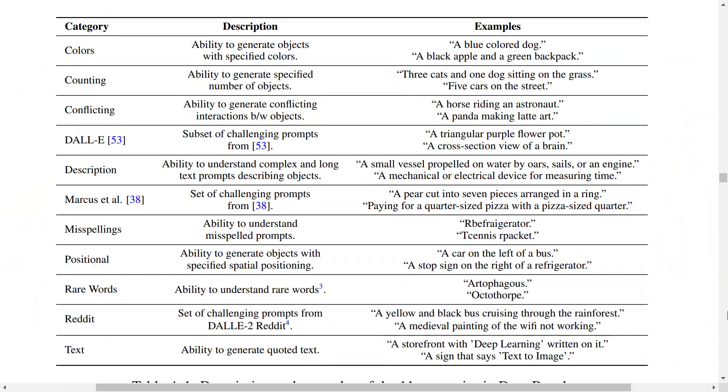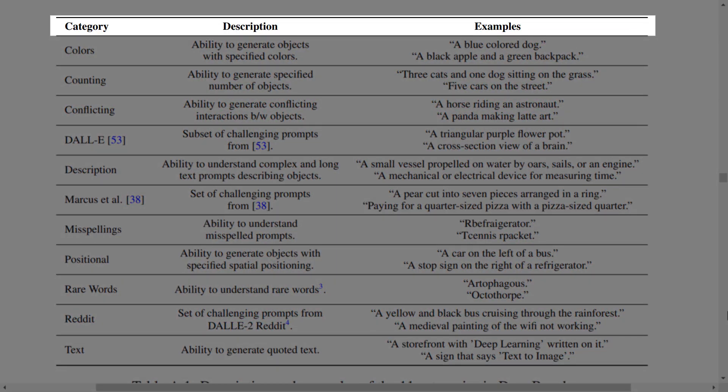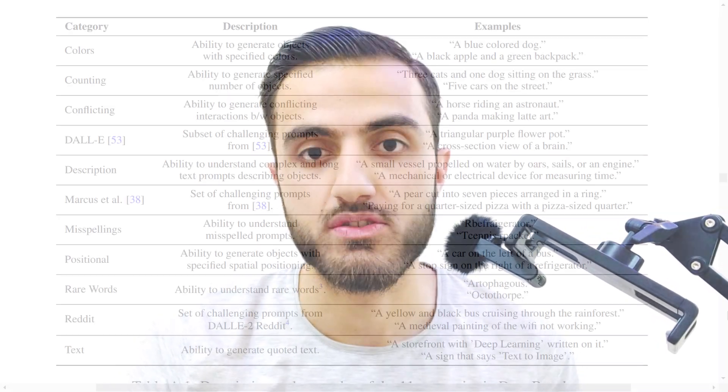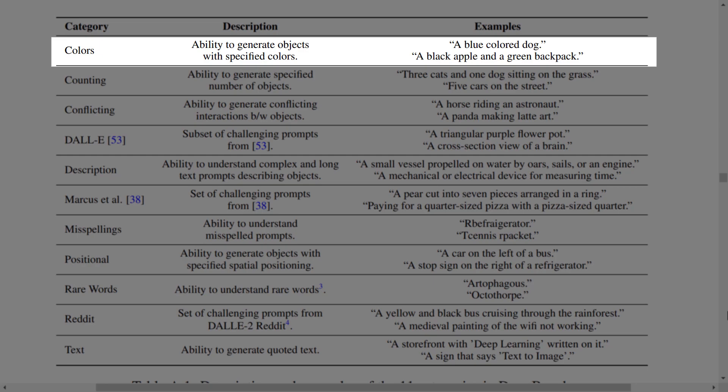Here are Imagen's features. You can see category, description, and examples — these describe its ability to generate content in these categories. For example, we have colors: the AI has the ability to generate objects with specified colors, like a blue-colored dog.